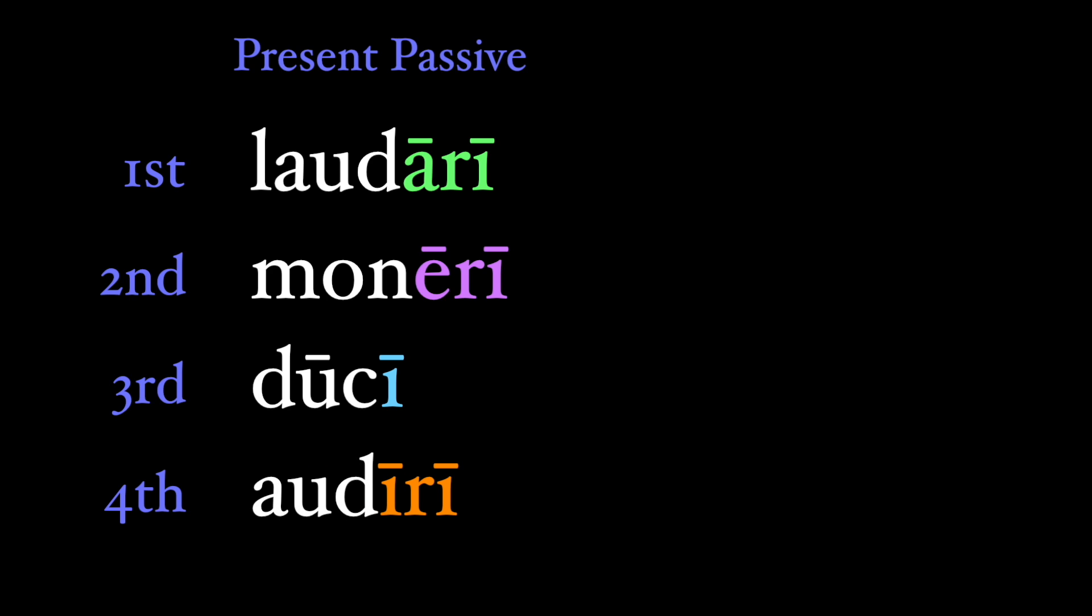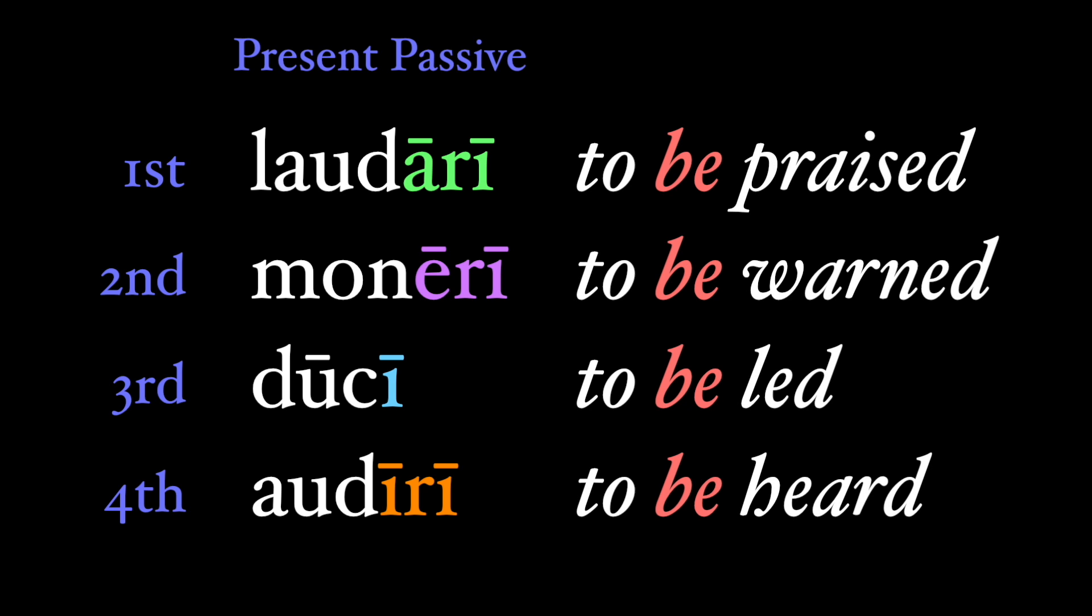And remember that all passive verbs in English utilize a form of be. So while laudāre is to praise, laudārī is to be praised. We can go through the rest of the translations too. Monērī is to be warned, dūcī is to be led, and audīrī is to be heard.